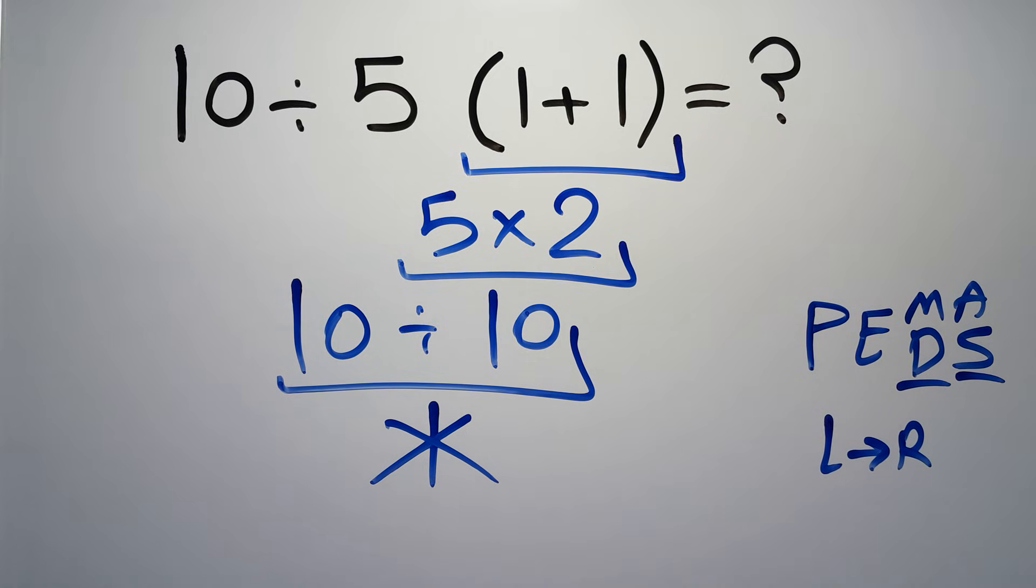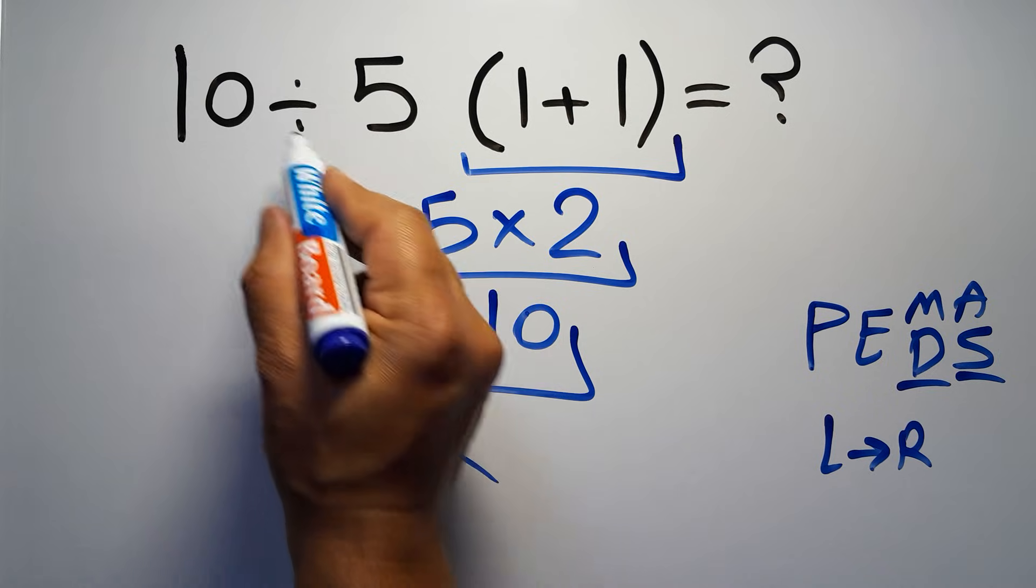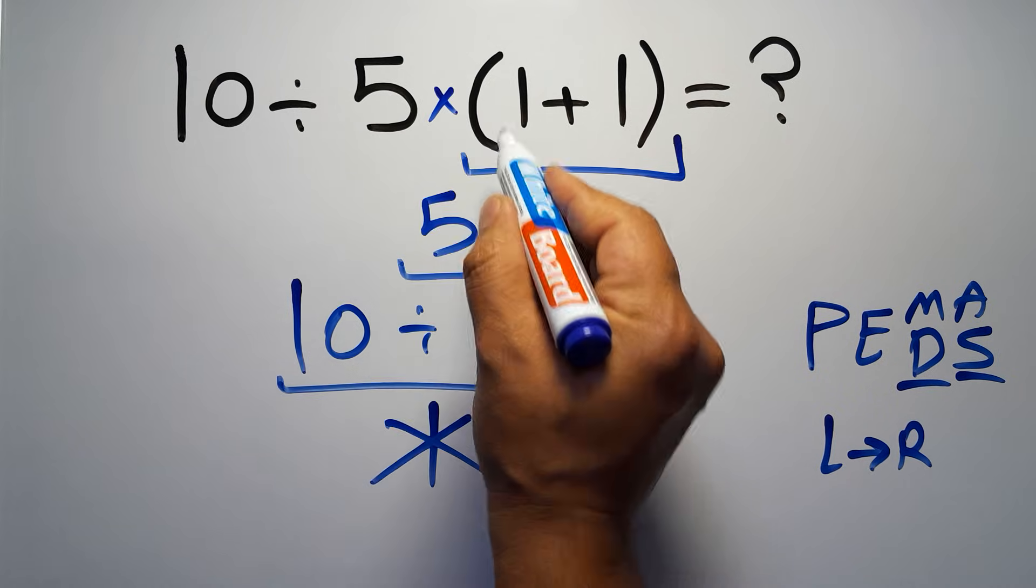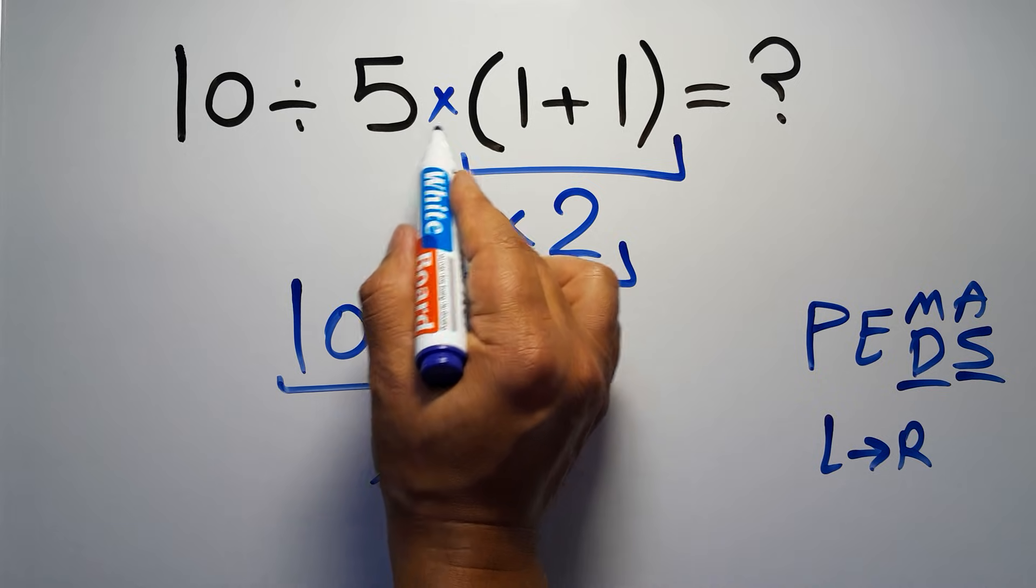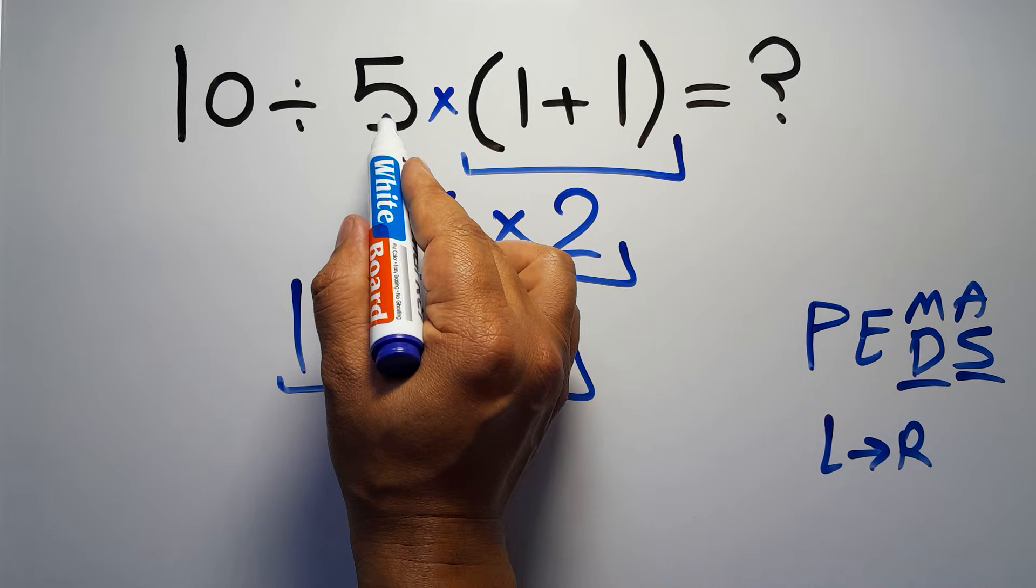In this expression we have one division, one multiplication, and parentheses. Inside the parentheses we have addition. We have a multiplication here because in mathematics, when a number is placed next to parentheses it means multiplication, and we usually don't write the multiplication sign for brevity.